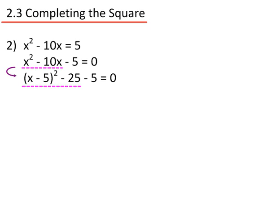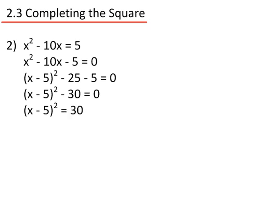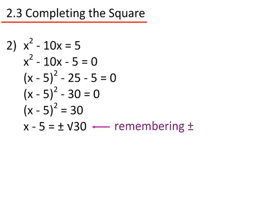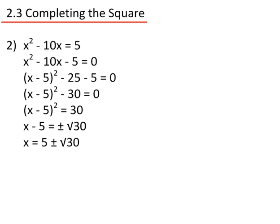So x minus 5 all squared minus 25 equals the x squared minus 10x that we wanted. Now I have minus 25 minus 5, which gives minus 30. So x minus 5 all squared minus 30 equals 0. Adding 30 to both sides: x minus 5 squared equals 30. Taking the square root of both sides gives x minus 5 equals plus or minus the square root of 30. Adding 5 to both sides: x equals 5 plus or minus the square root of 30. So either x equals 5 plus the square root of 30, or x equals 5 minus the square root of 30.